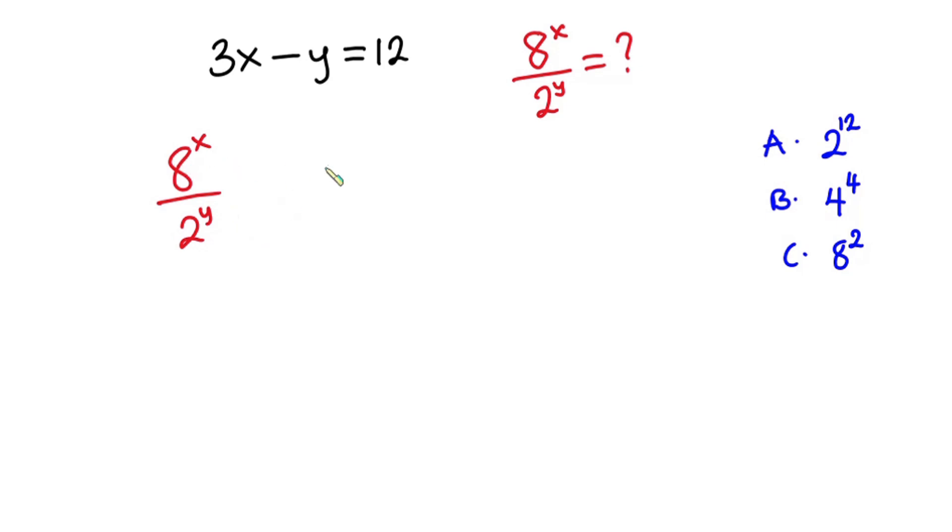And this 8 could also be written as 2 to the power 3. So in place of 8, I'm going to write 2 to the power 3, then to the power x over 2 to the power y. And this is also the same as 2 to the power 3x over 2 to the power y.